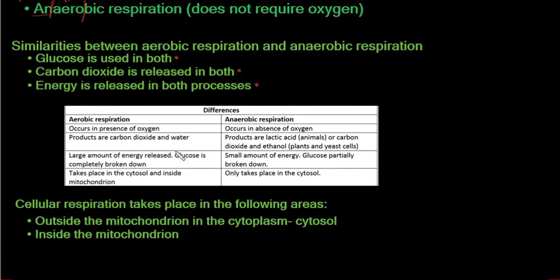The differences: aerobic respiration occurs in the presence of oxygen, anaerobic in the absence. Aerobic products are carbon dioxide and water. Anaerobic products in animals are lactic acid; in plants and yeast cells, carbon dioxide and ethanol. Aerobic respiration releases a large amount of energy because glucose is completely broken down. Anaerobic releases very little energy because glucose is only partially broken down. Aerobic respiration occurs in the cytosol and inside the mitochondria; anaerobic takes place only in the cytosol.